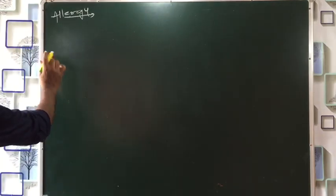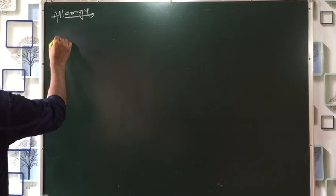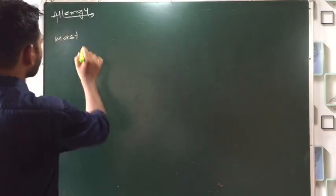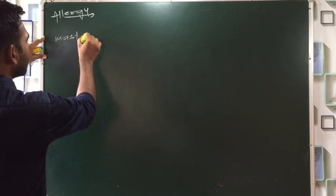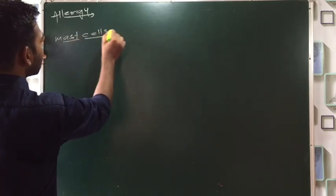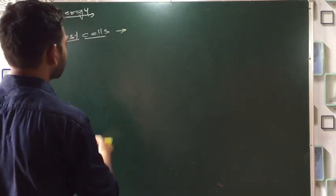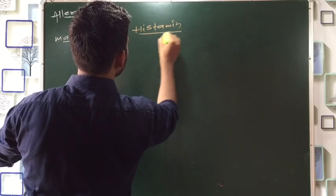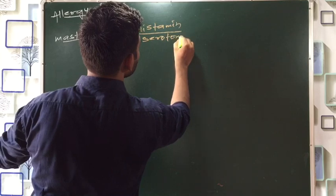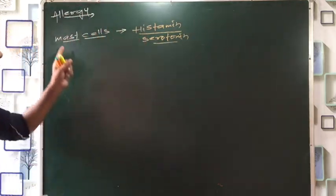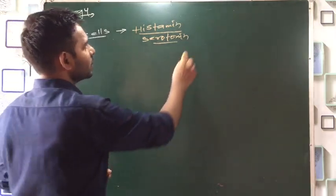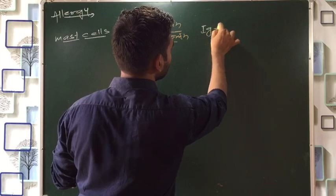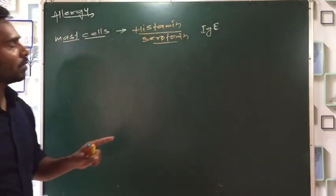Now, what happens in allergy? What happens in our body? In our body, the blood vessels have mast cells. What do these mast cells produce? These produce very important chemicals: one is histamine and one is serotonin. This is also given in your book and NCERT. These two chemicals are secreted by mast cells. In addition to this, which antibody level will increase? The IgE antibody level will increase.